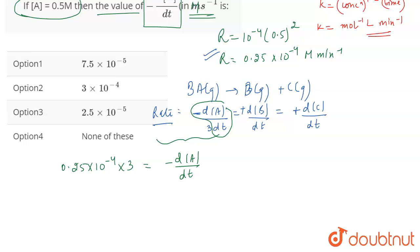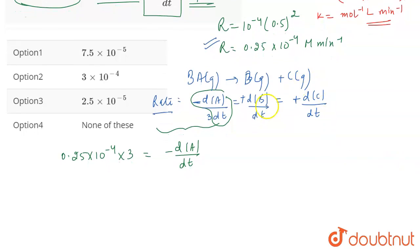But mind it, the value that we are going to calculate will be per minute, but we have to calculate it per second. So this will be equal to 0.75 into 10 to the power minus 4 molar minute inverse. This will be the value of minus dA by dt, but we have to calculate it in seconds.